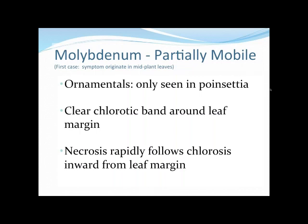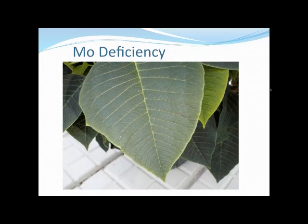Molybdenum is pretty easy for ornamental crops because the only ornamental crop where we've really seen molybdenum deficiency is in poinsettias. So you can be looking for that in poinsettias and don't really have to think about molybdenum in other ornamental crops. It's just a clear chlorotic band around the leaf margin that we're looking for. This can sometimes be mistaken for CyCocel damage, which looks very similar on poinsettias, but if you know you haven't applied any CyCocel recently and you're seeing this chlorotic band, you know you're dealing with molybdenum.